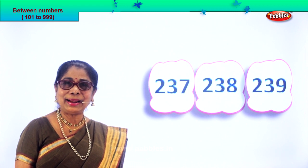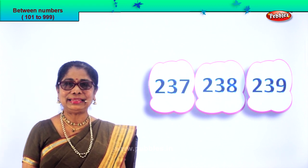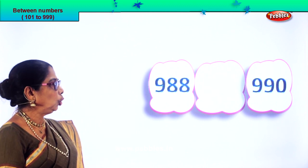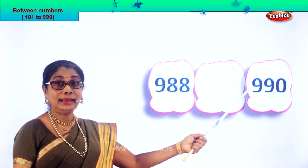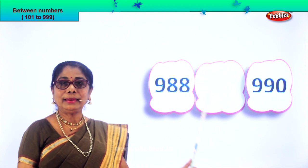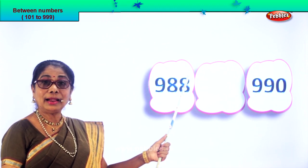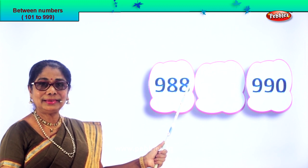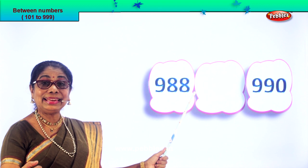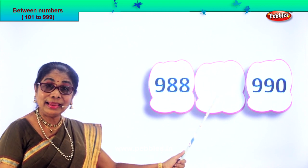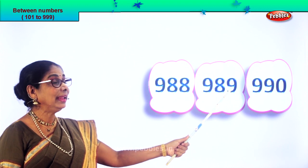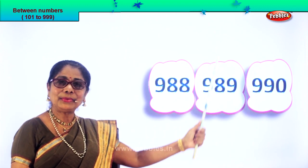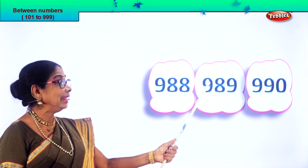Did you enjoy finding the middle number? Let's take another set of numbers. Read aloud: 988 and 990. After 8 comes 9, so after 88 comes 89. The next number will be 989. So 988, 989, 990. The number between is 989.